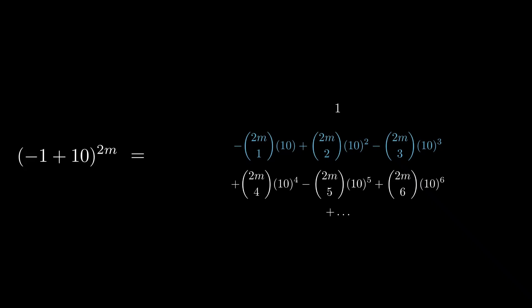For example, taking m equal to 1000 works. With this choice, all terms except the first have at least 4 trailing zeros. The first term is 1 and the entire expression is positive, so the expression must end with 3 zeros followed by 1.